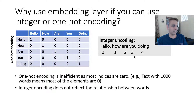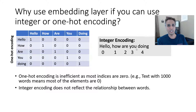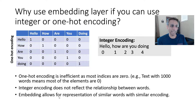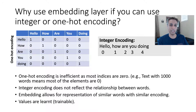Integer encoding is also not great because it does not reflect the relationship between words. For example, the word 'are' often appears between 'how' and 'you' — 'how are you doing?', 'how are you feeling?', 'what are you doing?'. The word 'are' is contextually associated with 'you', 'how', 'what', and so on. These associations are completely gone if you just use 0, 1, 2, 3, 4. Embedding allows for the representation of similar words using similar encoding, and the learning process determines that encoding based on training examples. This is why embedding is commonly used in natural language processing.